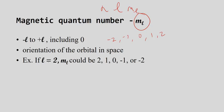If the azimuthal quantum number is two, that means this is a D subshell. There are your five orbitals, identified by two, one, zero, negative one, negative two. It's just a number — it's a spot in space.